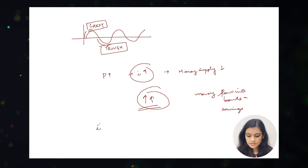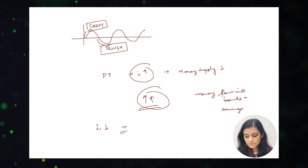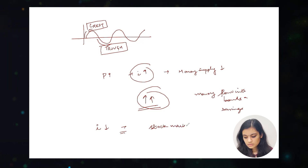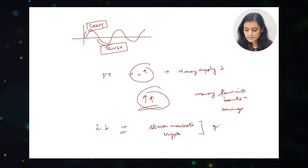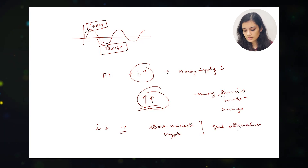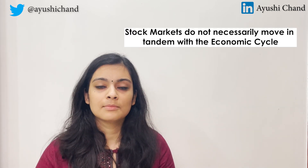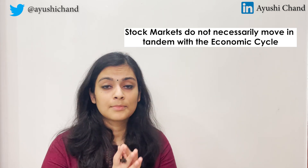Similarly, if interest rates fall, a lot of money pours out of bonds into the stock market — and now also into cryptocurrencies — because stock markets and cryptos act as good alternatives to bonds and savings accounts. So stock markets do not necessarily move in tandem with the economic cycle because they are guided by a number of factors.